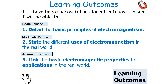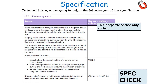We should be able to detail the basic properties of electromagnetism, state the different uses of electromagnets in the real world, and link the basic electromagnetic properties to applications in the real world, which is part of the GCSE Separate Science Physics specification in 4.7.2.1 electromagnetism. In particular, students should be able to interpret diagrams of electromagnetic devices in order to explain how they work.